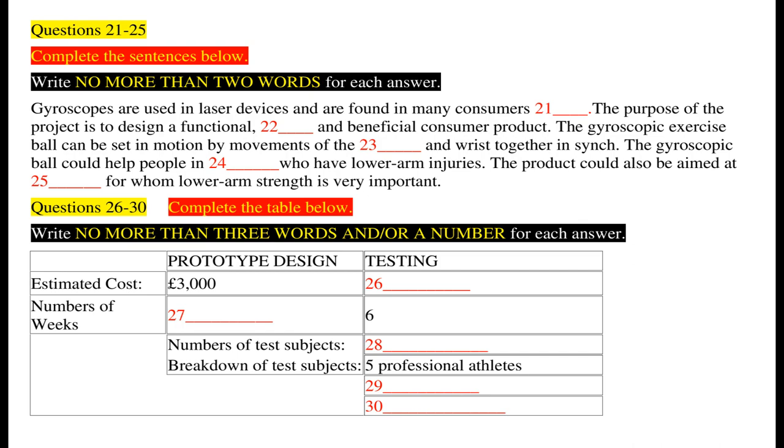Gyroscopes can be found in many consumer appliances too. Right. Tell me about this product specifically though. The aim of the assignment is to create something practical, functional and beneficial for consumers. Justify your decision. Well, we believe we can design and build a cheap and effective muscle strengthening aid by taking advantage of the inertial forces created by a gyroscope.